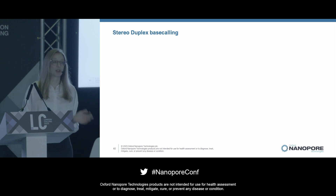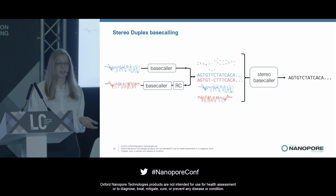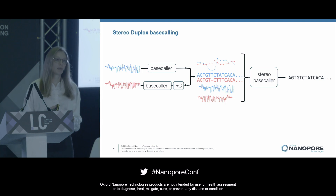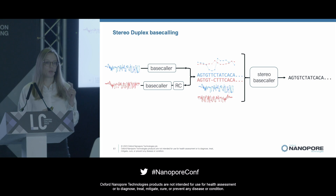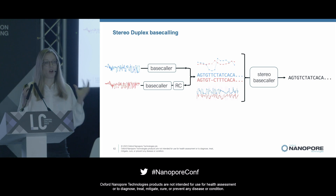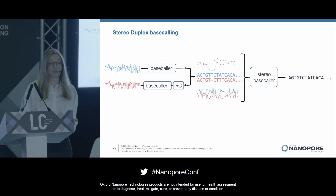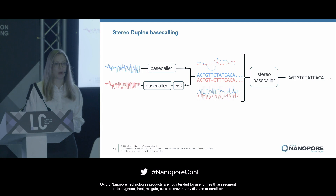Today I'll focus on the version implemented in Dorado, which we call stereo duplex. We take our two input signals, base call them independently with the normal simplex model, and do a reverse complement on the second strand. We then take those two base call sequences, align them to each other, and use the sequence-space alignment to align the quality scores and the signals themselves. All of this alignment information is fed into the stereo base caller model, which has a very similar architecture to the simplex base caller but with a richer multi-feature input. The base caller is also flexible enough to accept simplex base calls from either the HAC or the SUP models, and it produces that high-quality output sequence.